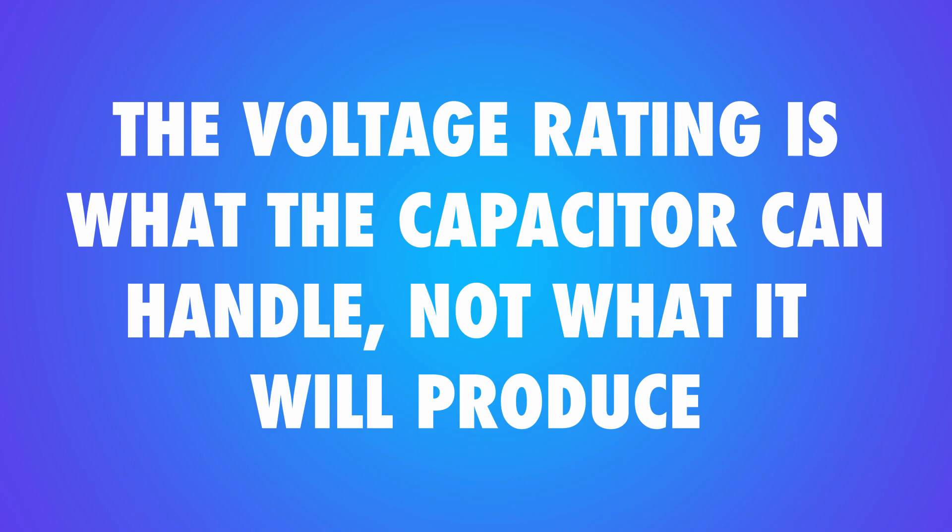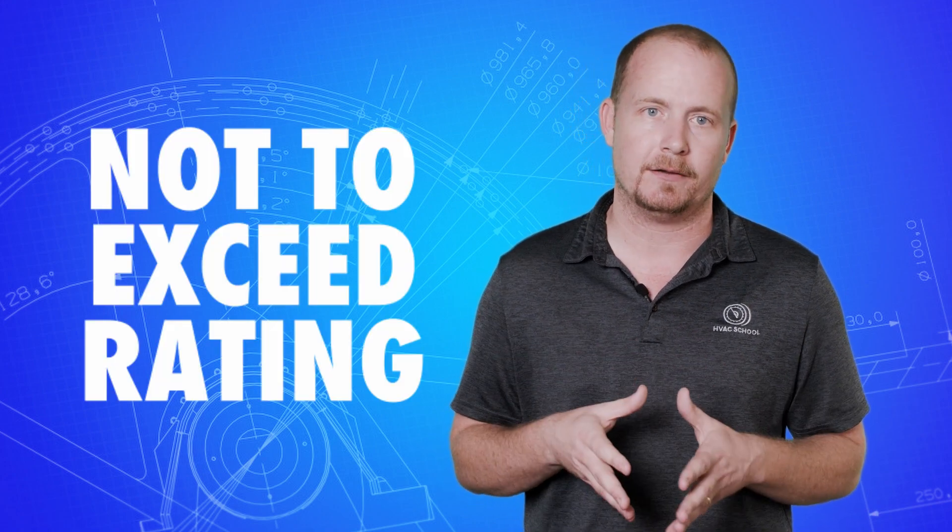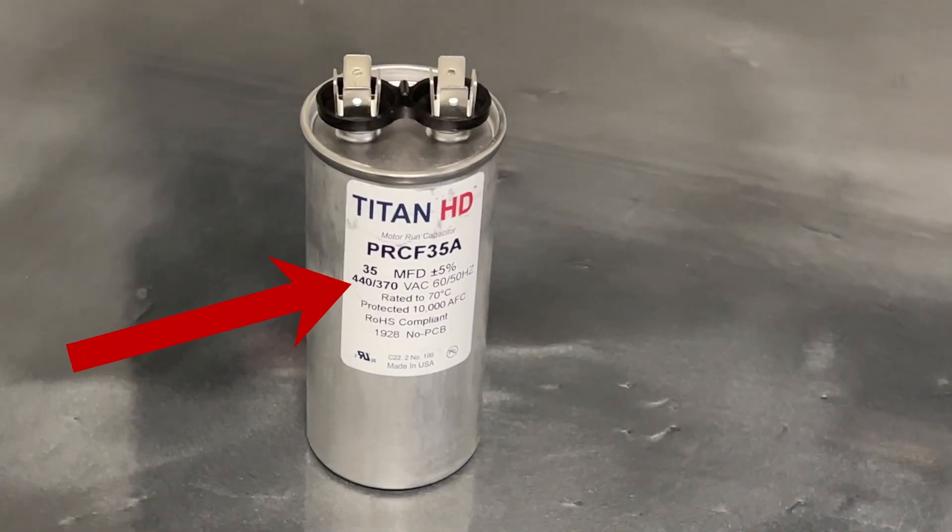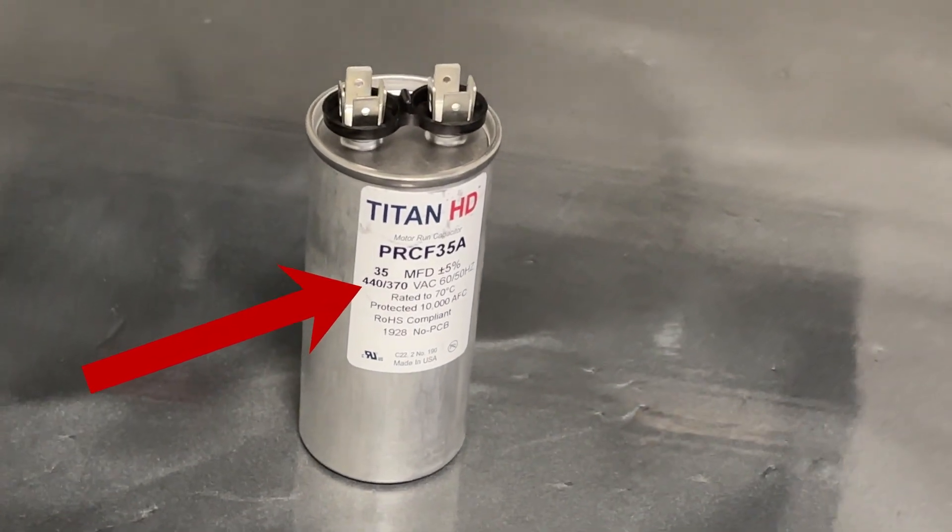The voltage rating is what the capacitor can handle, not what it will produce. Many techs think they must replace a 370 volt capacitor with another 370 volt capacitor. The voltage rating displays the not to exceed rating, which means you can replace a 370 volt with a 440 volt, but you cannot replace a 440 volt with a 370. This misconception is so common that many capacitor manufacturers begin stamping 440 volt capacitors with 370 slash 440 just to eliminate confusion.